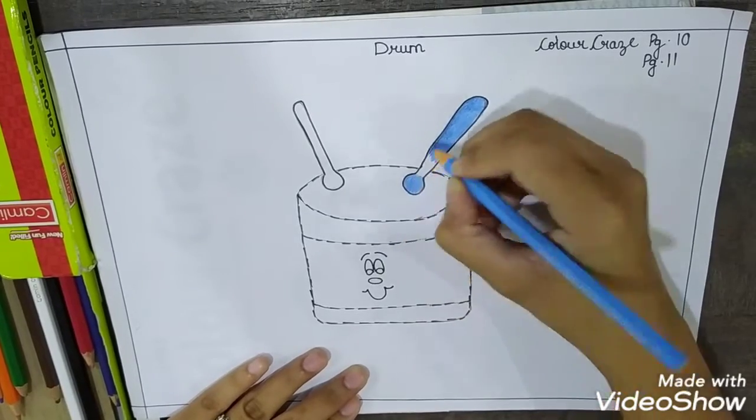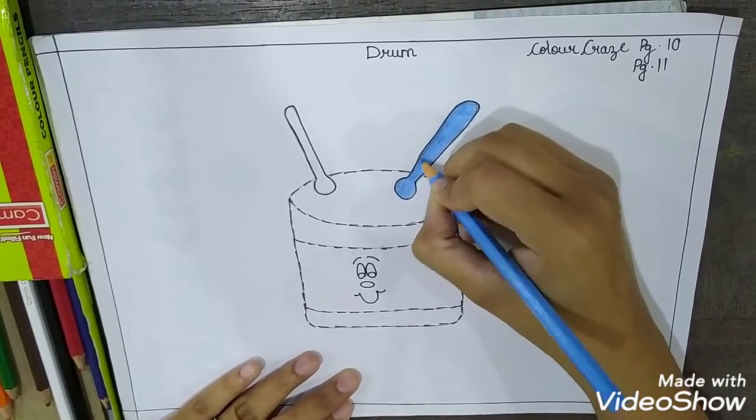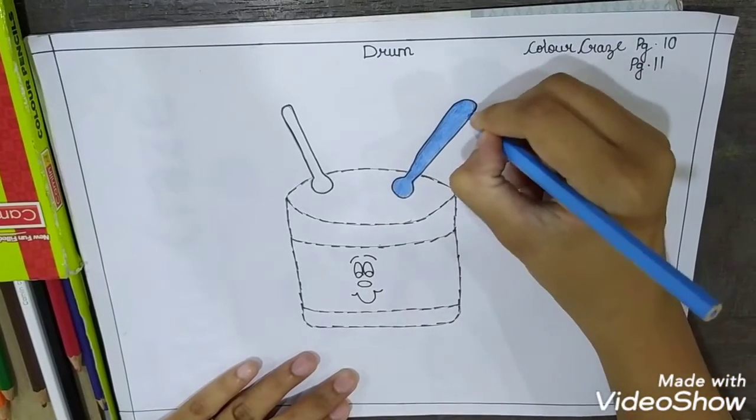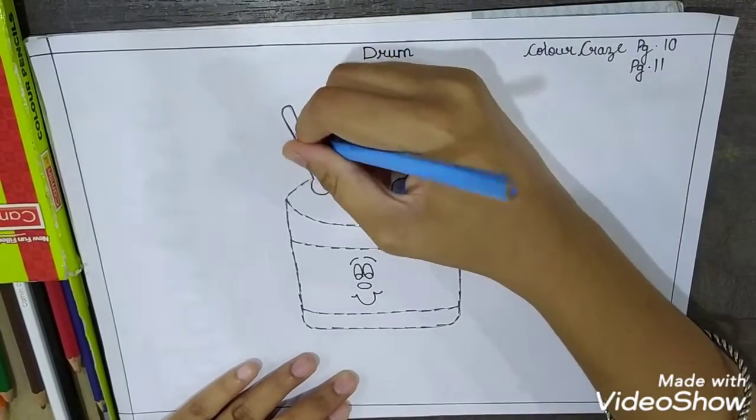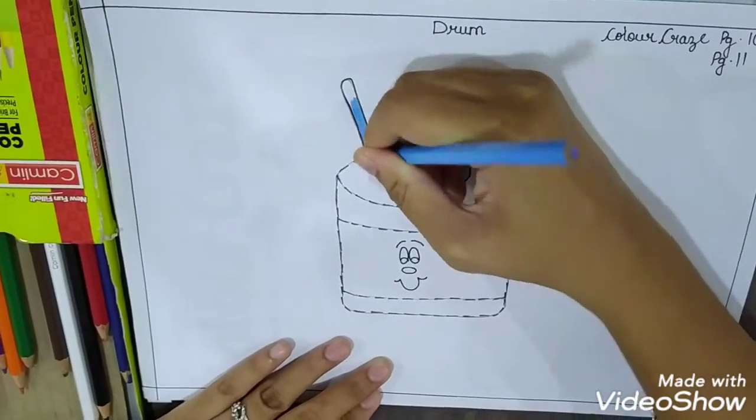So color it in one direction only. So it can be standing or sleeping. Anyhow. But color it in one direction only. Okay. Now...